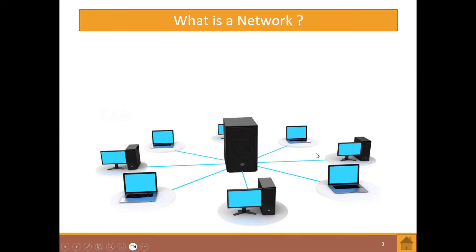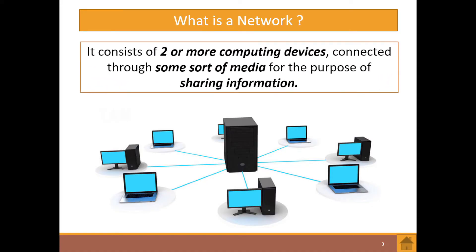First things first — let's define what a network is. A network consists of two or more computing devices, which could be a laptop, a desktop, a smartphone, or a tablet. These devices are connected through some sort of media — wired or wirelessly — for the purpose of sharing information: sharing data, copying, sending, and all of these things.